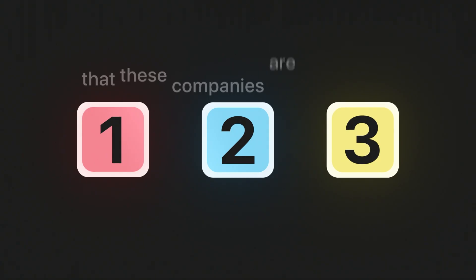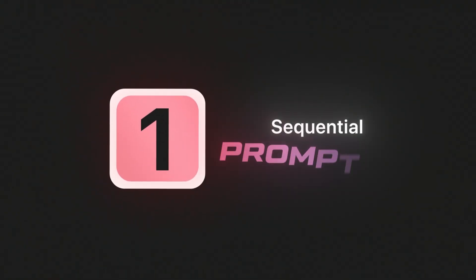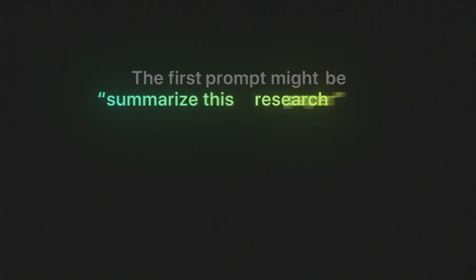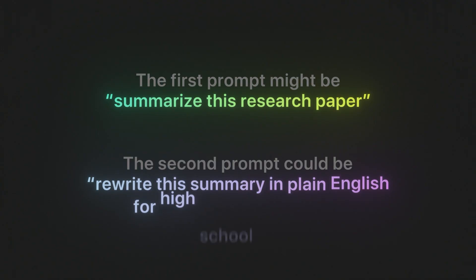There are three main ways these companies suggest using multi-prompting. Number one: sequential prompting. This is when the output of one prompt becomes the input to the next. For example, the first prompt might be 'summarize this research paper,' and then the second prompt could be 'rewrite this summary in plain English for high school students.' We're chaining these prompts together for layered refinement that's quite hard to achieve in just one go. Google highlights this as a great way to reduce hallucinations and make sure each step is focused on a dedicated part.